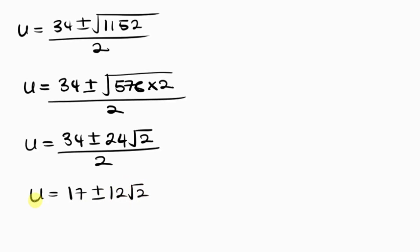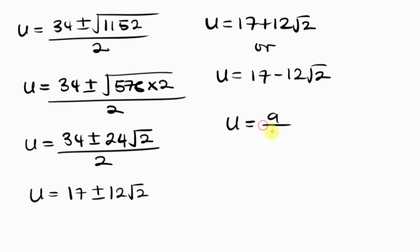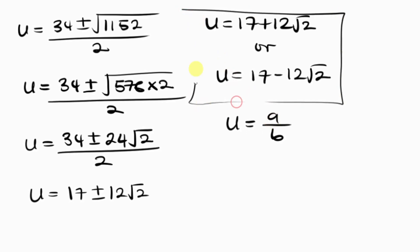So u equals 17 plus 12 root 2, or u equals 17 minus 12 root 2. And since u equals a over b, which is what the question asks us to find, these are our final solutions.